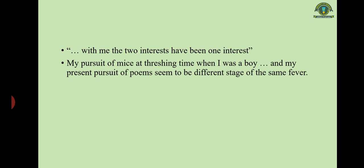Hughes says in Poetry in the Making: 'With me the two interests have been one interest — the interest of capturing animals and of writing poetry. My pursuit of mice at threshing time when I was a boy, and my present pursuit of poems, seem to be different stages of the same fever.' He traces the origin of his poetry writing back to those old days when as a child he used to pursue mice and other animals.